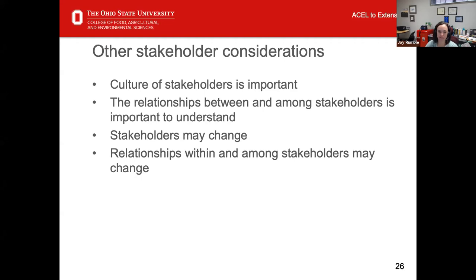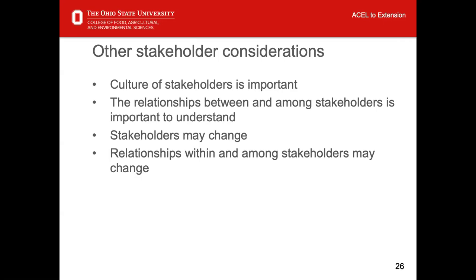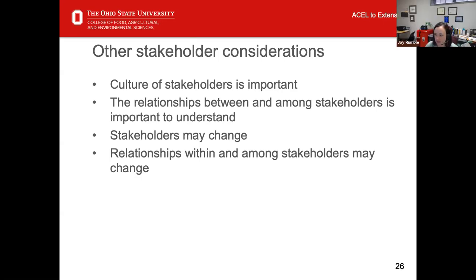Those were the major steps to help you identify the stakeholders, their roles, and their engagement in your program evaluation. I hope that's been helpful to help you think about how you might utilize different stakeholders in your program evaluations. Some other things to be cognizant of: the culture of your stakeholders. It's really important to think about the culture of your stakeholders because part of making sure these relationships work well is making sure you know that audience and aren't unintentionally offending them or impeding that trust.